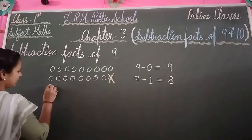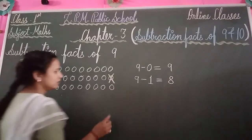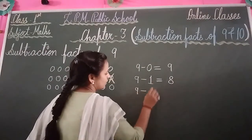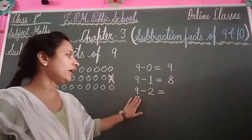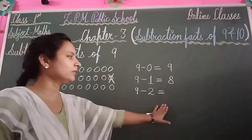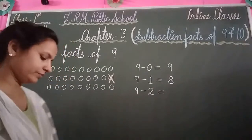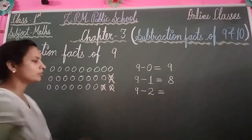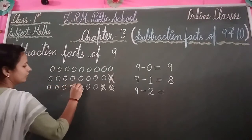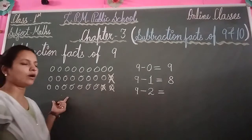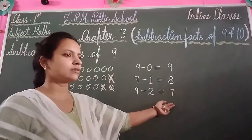Again draw your 9 balls: 1, 2, 3, 4, 5, 6, 7, 8 and 9. Write your digit: 9 minus 2 equal to. Cut and cross out 2 balls. Count the balls left: 1, 2, 3, 4, 5, 6, 7. How many balls are left? 7. The answer is 7. Is that clear, students?